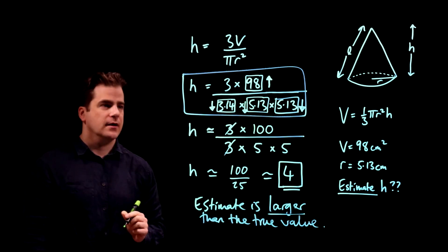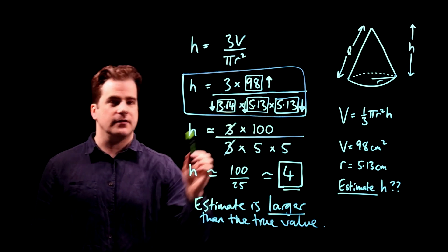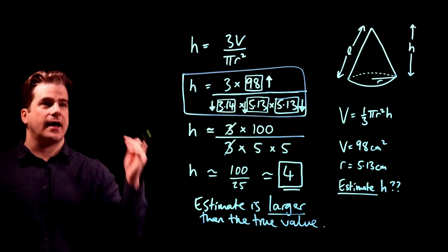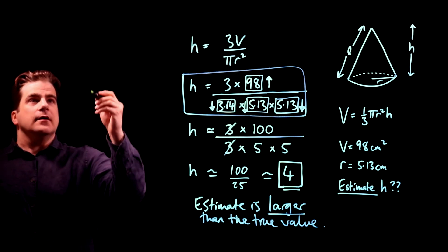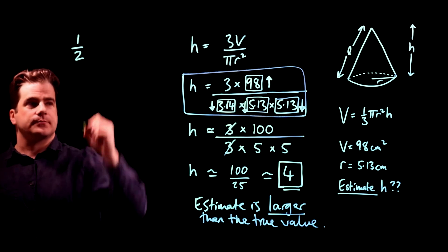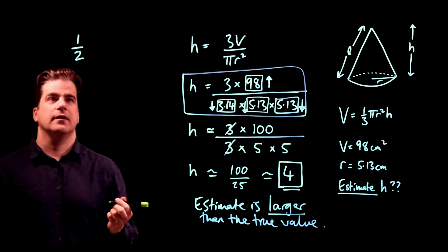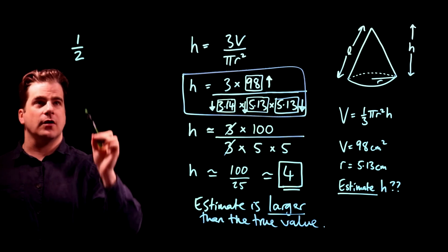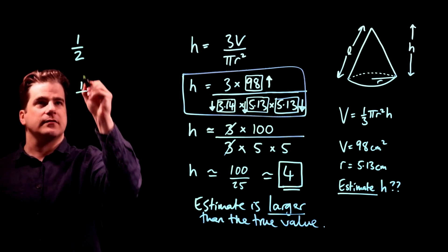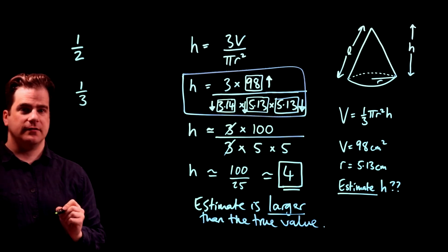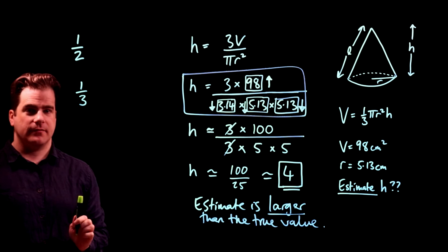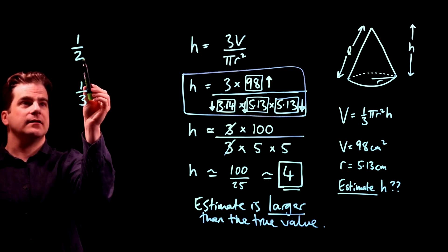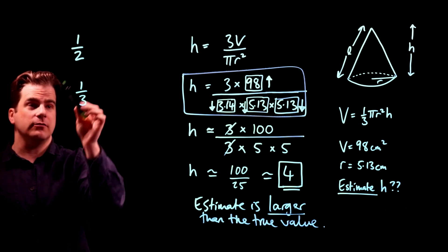I'll just quickly explain why numbers in the denominator, when they get smaller, make the number get bigger. Let's look at a fraction. Let's look at a half. So there's a half. Let's make the number in the denominator bigger, increase it from two to three. Which of these numbers is bigger? A half is bigger. A third is smaller than a half. So by increasing the number in the denominator, we've made the whole thing smaller.